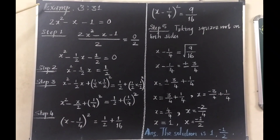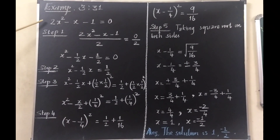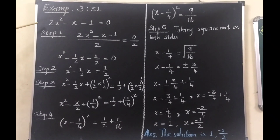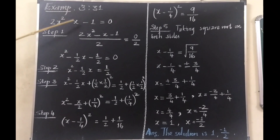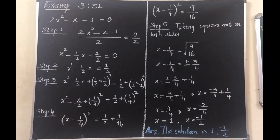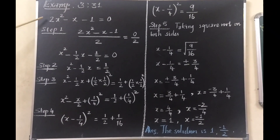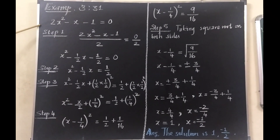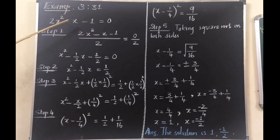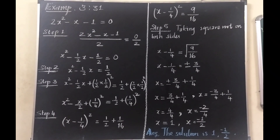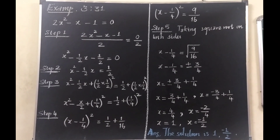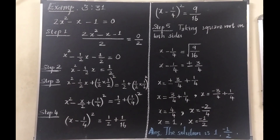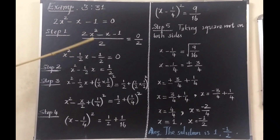Look at Example 3.31 — here also a quadratic equation is given and we solve it by the completing square method. Look at the equation. Is it in the correct format ax squared plus bx plus c equals 0? Now look at the coefficient of x squared: it is not 1, it is 2. So we have to divide the full equation by 2. The previous sum we did not divide because the coefficient of x squared was 1; here it is 2, so we divide by 2.